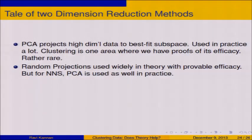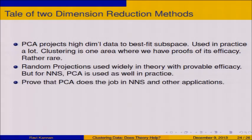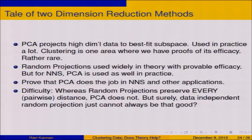In the main, there are two dimension reduction techniques. One is PCA: it projects high-dimensional data points into the best fit linear space, used in practice a lot. Clustering is probably one area where we have proofs of its efficacy. In theory, we also use the random projection method for dimension reduction — used a lot for nearest neighbor search. With random projection, you can prove things; with PCA, you cannot prove things as easily. It remains an interesting open question whether you can prove more things about PCA, especially for nearest neighbor search, where PCA is used a lot in practice without many proofs of its efficacy.